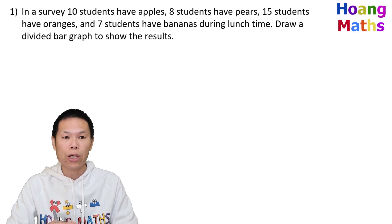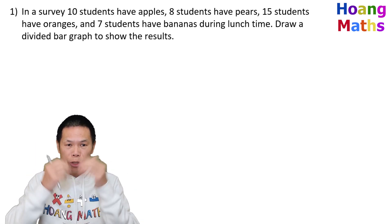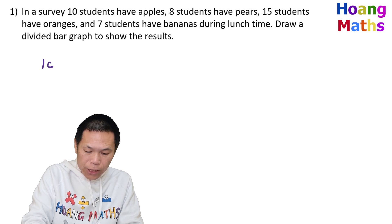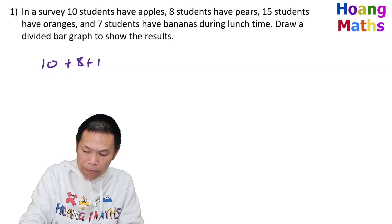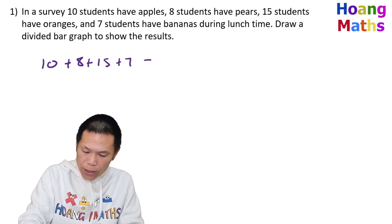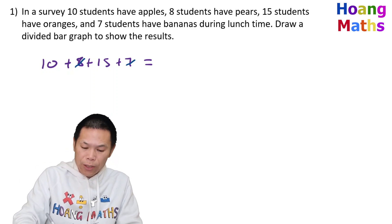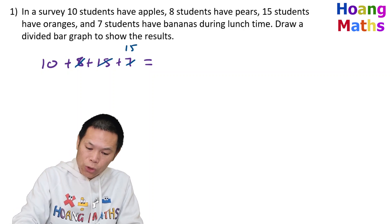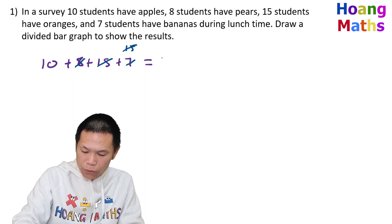First of all, we need to work out how many students there are altogether. So let me add them up: 10 students, plus 8, plus 15, plus 7. Eight plus seven gives me 15, and 15 plus 15 gives me 30, then we add another 10, so it's 40 students altogether.